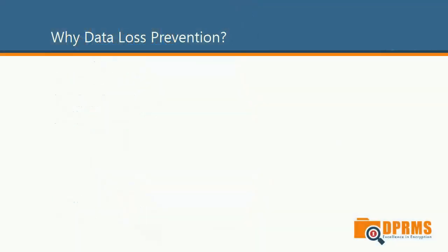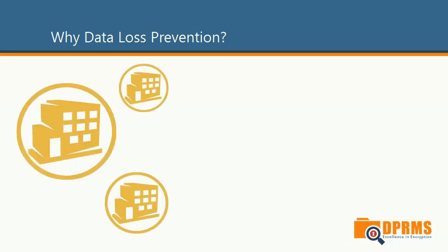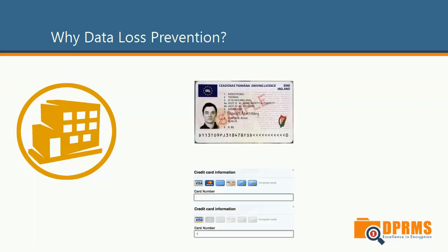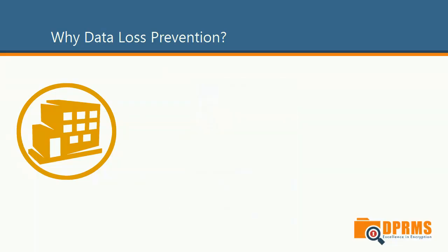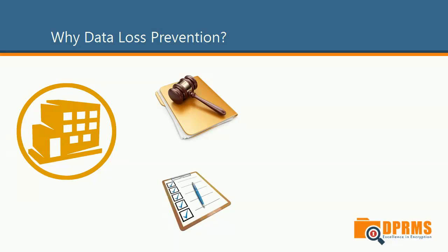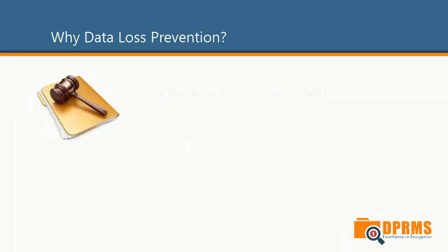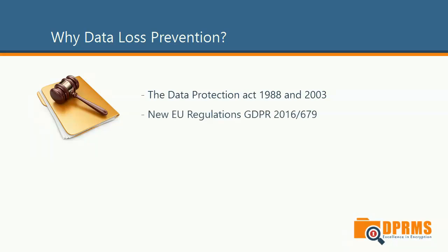So what is data loss prevention technology and why would you need it? Organizations, no matter the size, are in general regulated when it comes to how specific kinds of information can be stored, transferred, or disclosed. It can be regulation by law or industry standards. Some examples include the Data Protection Act here in Ireland, which regulates how personal data can be handled. This regulation is soon to be replaced by the new EU regulations.